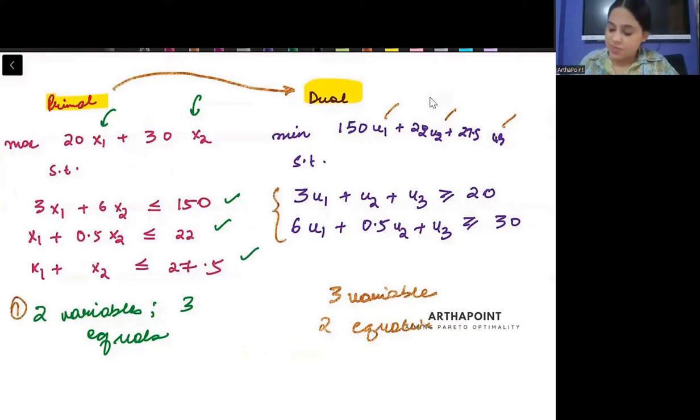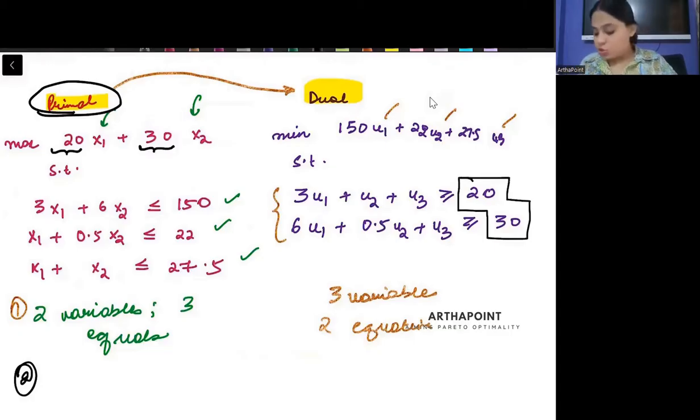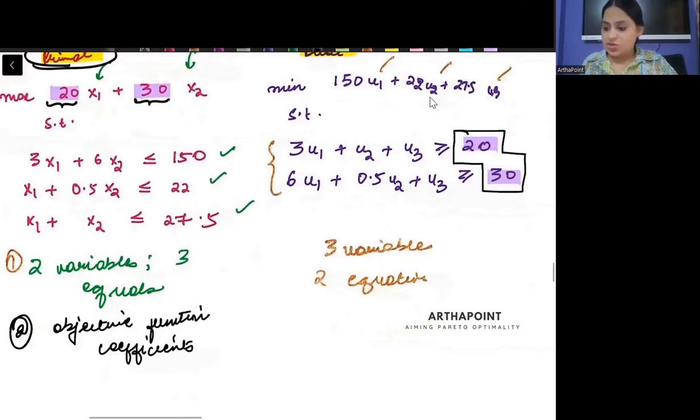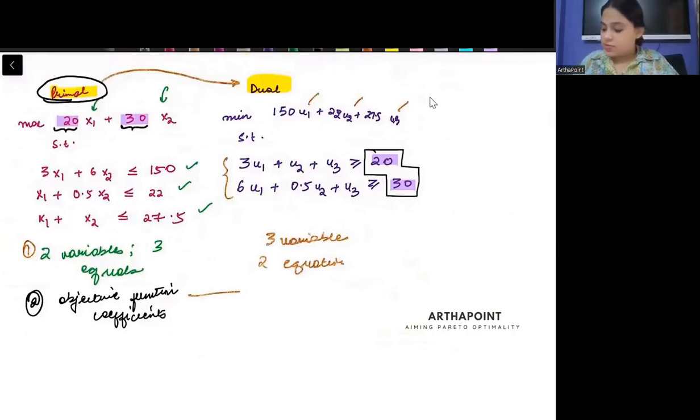Look at the second aspect. When you write the primal, then the coefficients of the objective function become the constraints in the dual. The objective function coefficients - 20 and 30 - they go here as 20 and 30. They will become the constraints of the dual.